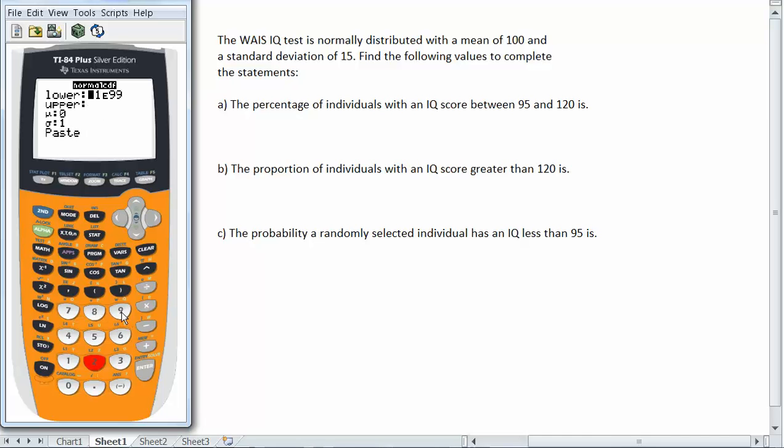My lower limit was 95, so next to lower I'm going to type 95. Then I cursor down using the down arrow to upper. The upper limit of this particular range of values is 120, so type 120.